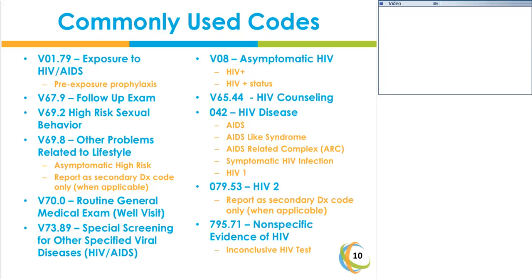Code 079.53 is reported for patients diagnosed with HIV-2. Any time a patient has a confirmed diagnosis of HIV-2, you require two diagnosis codes: 042 as the principal diagnosis and 079.53 as the secondary diagnosis. Code 079.53 would never be sequenced as the principal diagnosis. The last commonly used ICD-9 code is 795.71 — nonspecific evidence of HIV, also known as inconclusive HIV testing. Any time a patient has an HIV test with no definitive diagnosis, the correct code is 795.71.